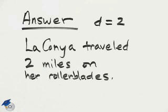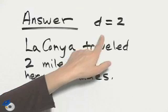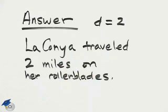The third step to the problem is to answer the question. We found that D was equal to 2, and D was indeed what we wanted to find. So the answer to the question is, Laconia traveled 2 miles on her rollerblades.